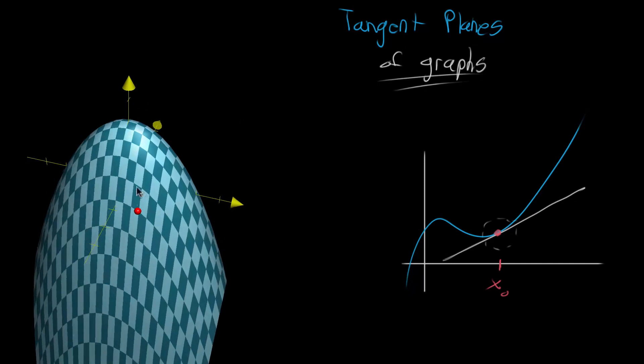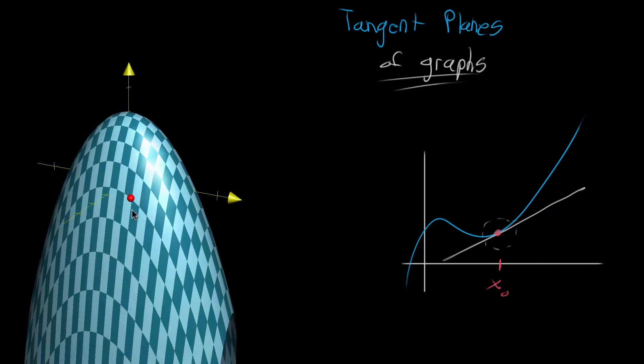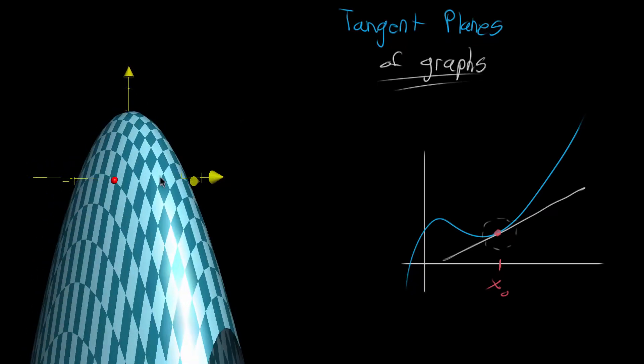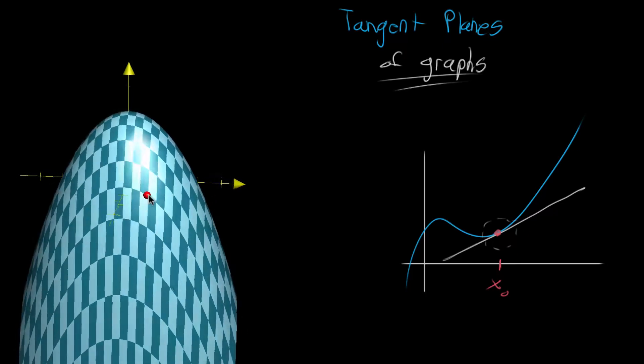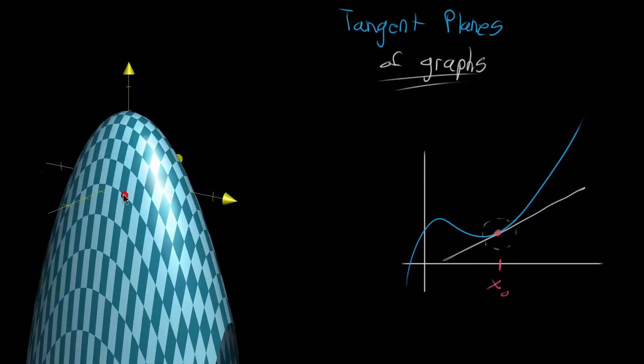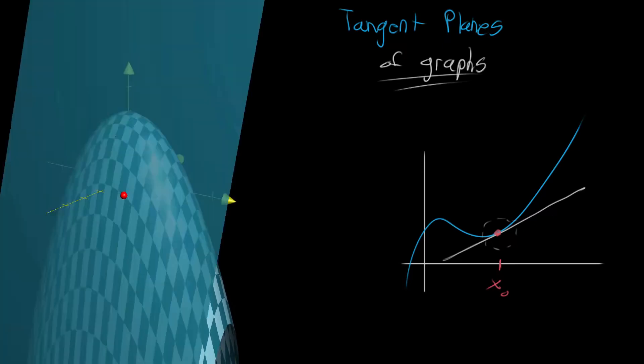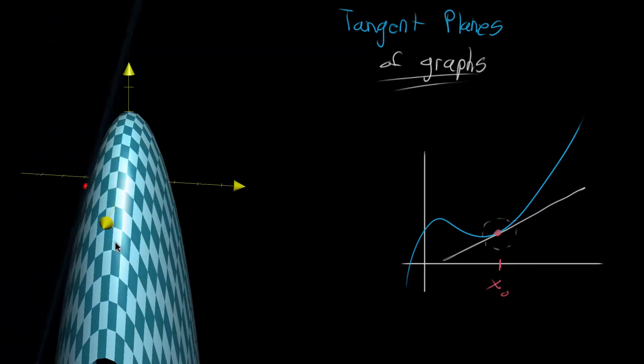you see where that is on the graph. So you kind of go and say oh, that input point corresponds to such and such a height. So in this case it actually looks like the graph is about zero at that point. So the output of the function would be zero. And what you want is a plane that's tangent right at that point.